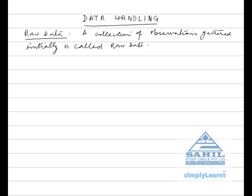Data handling, raw data. A collection of observations gathered initially is called raw data. For example, marks obtained by five students: 17, 15, 22, 39, 45.